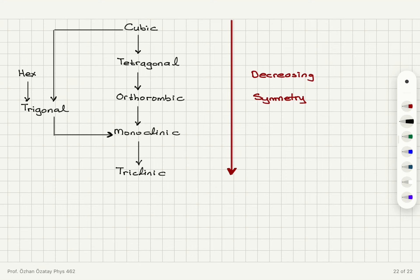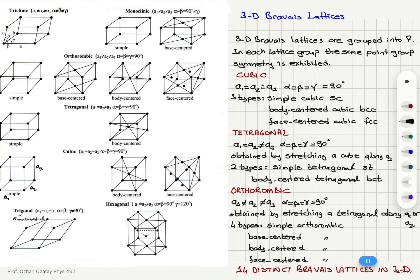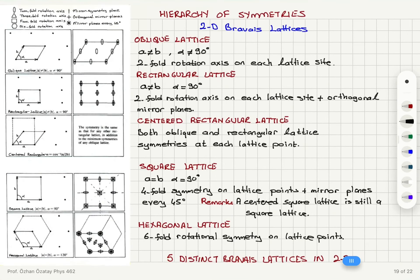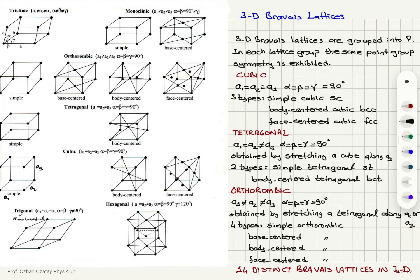So this is the hierarchy of symmetries in the three-dimensional Bravais lattices. To summarize, we have five distinct types of Bravais lattices in two dimensions: oblique lattice, rectangular lattice, centered rectangular lattice, square lattice, and hexagonal lattice.